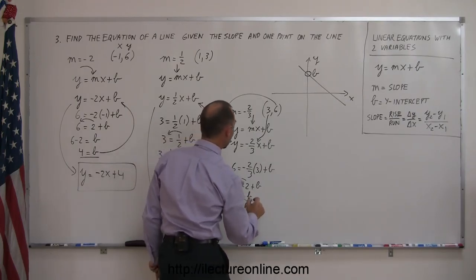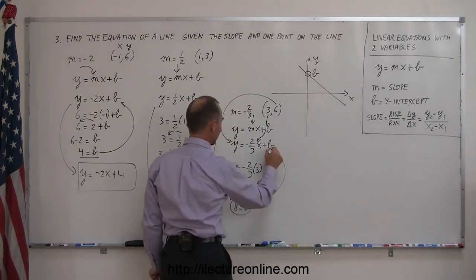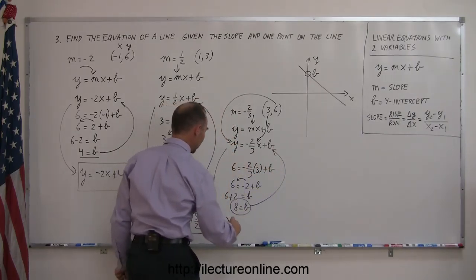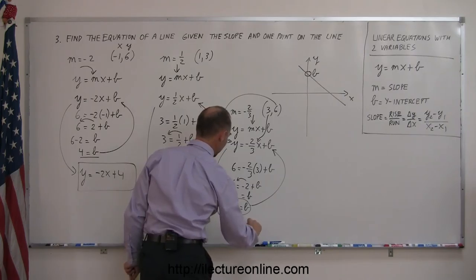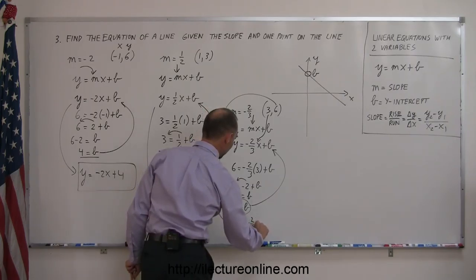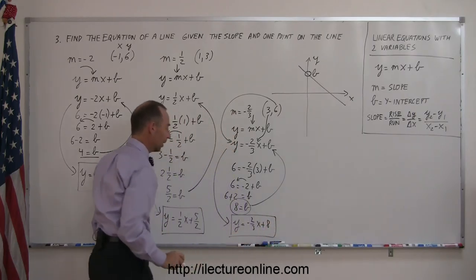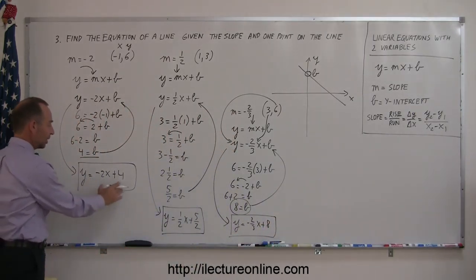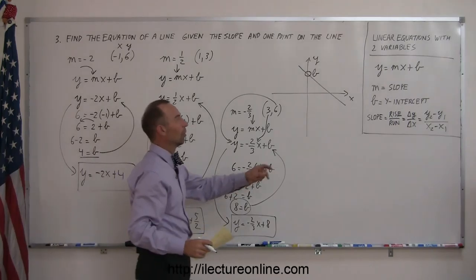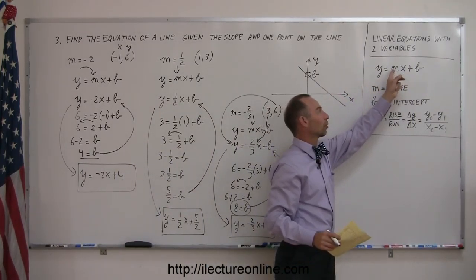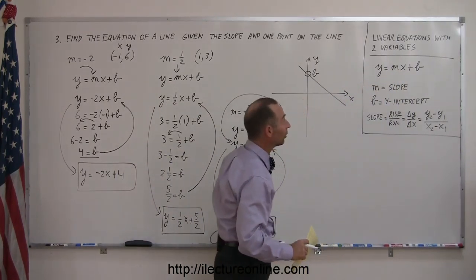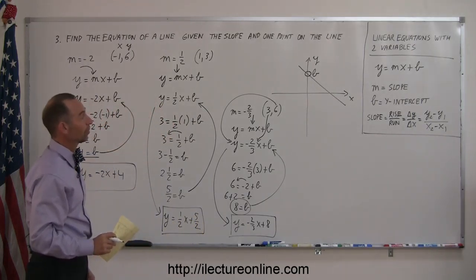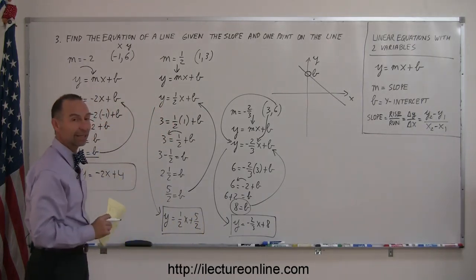Then you plug that back into your equation right here, and that means your equation you're looking for is y equals negative 2 thirds x plus 8, and there's the equation of the line. Notice that the answer in each case is in your general y equals mx plus b, or slope intercept form as they call this. So not too bad when you do it like this.